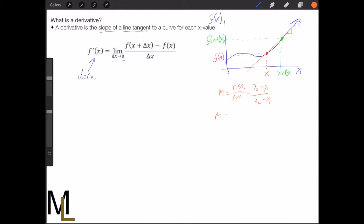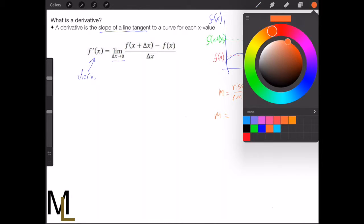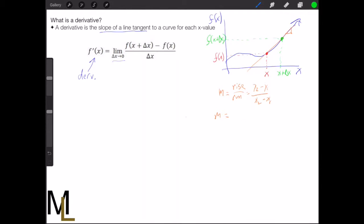In this case, our m will be equal to what? Well, first of all, our y2 and x2 are the green value here, which is farther along the x curve. So we get f of x plus delta x over, and there's going to be a minus here and a minus here.